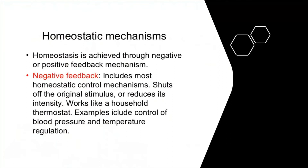What is the feedback mechanism? The feedback mechanism is basically a response of the body — which may be against any internal or external stimulus. Negative feedback mechanisms include most homeostatic control mechanisms. The negative feedback mechanism shuts off the original stimulus and reduces its intensity. It works like a household thermostat. Examples include control of blood pressure and temperature regulation.